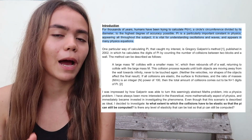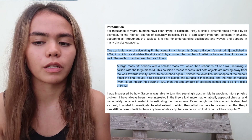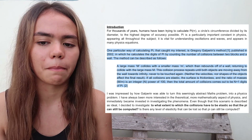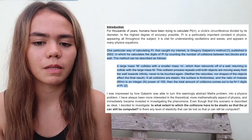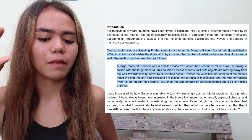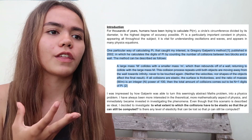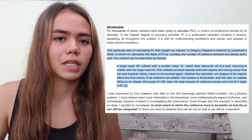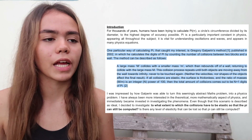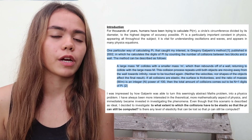After that interesting fact or story, I move into a bit of the theory behind my IA: 'One particular way of calculating pi that caught my interest is Gregory Galperin's method, published in 2002, in which he calculates the digits of pi by counting the number of collisions between two blocks and a wall. This method can be described as the following.' Then in an indented paragraph is a direct quote by Gregory Galperin explaining the theory — none of it is in my own words.